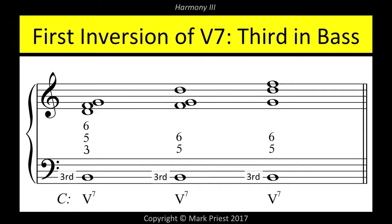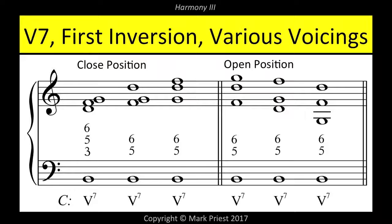The bass of the first inversion V7 is the third of the chord. Adding the root, seventh, and fifth of the complete chord puts the upper voices at respective intervals of sixth, fifth, and third above the bass note — hence the figuring VI-V3, often abbreviated as V6-5. This applies regardless of whether the upper voices are arranged in close position or open position. What counts is that the third of this 7th chord is situated in the lowest voice. Close, open.